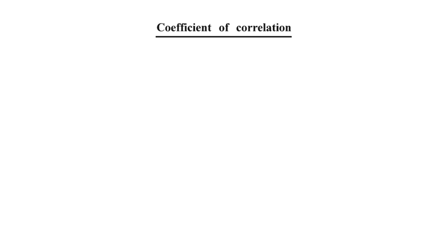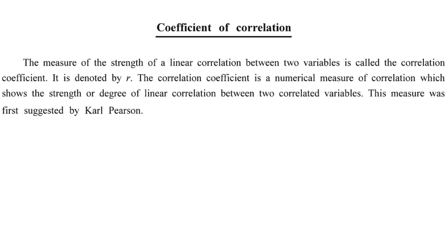The coefficient of correlation is the numerical measure of correlation, showing the strength or degree of linear correlation between two correlated variables. Statistics is all about numerical values, so this coefficient quantifies the relationship. It was first suggested by Carl Pearson, who gave the formula for the coefficient of correlation.